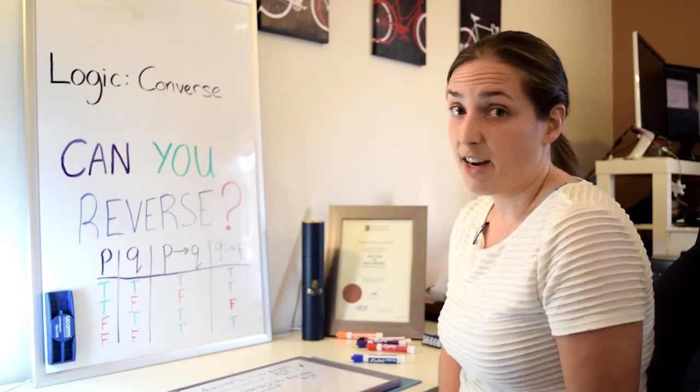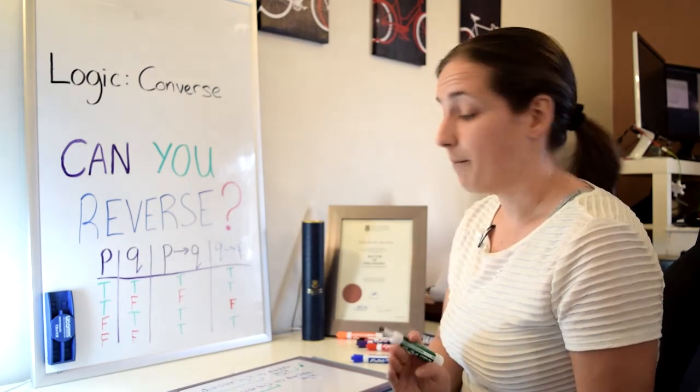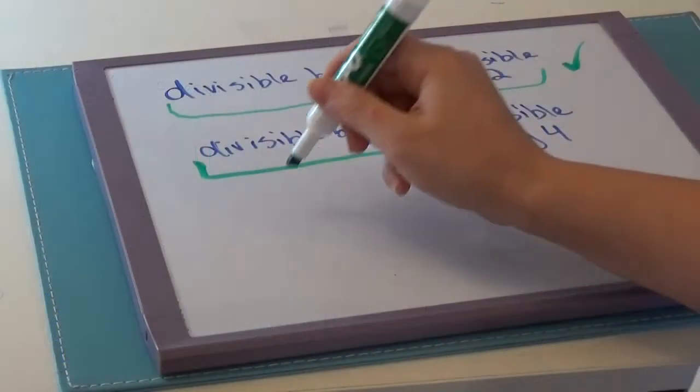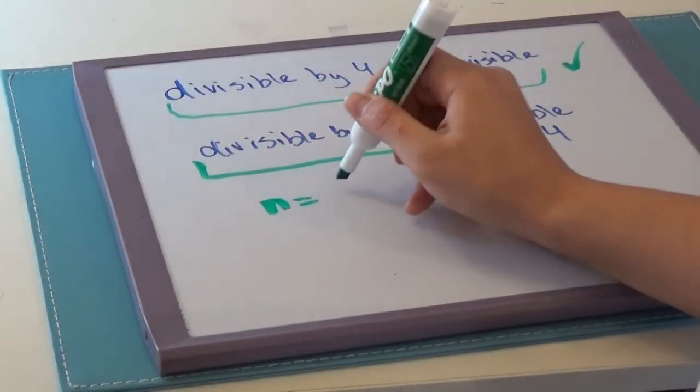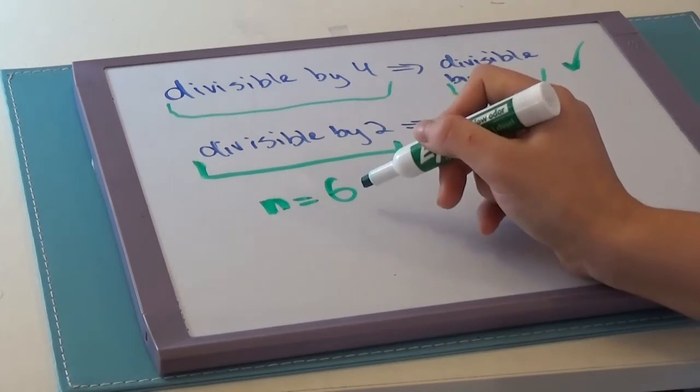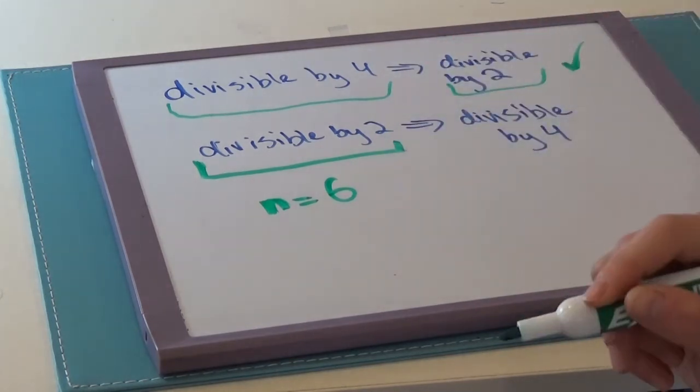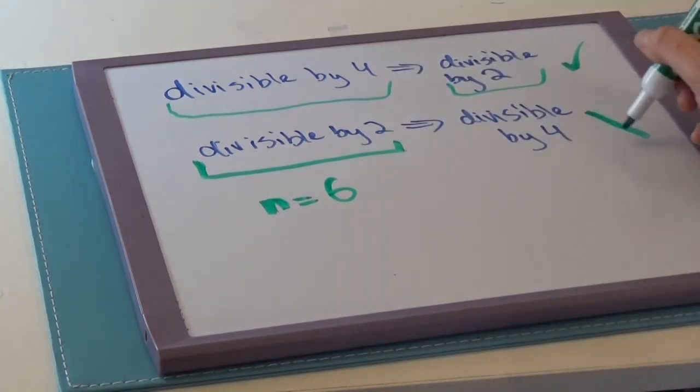No, because I can find many examples, but all you need is one. A particular example is something like n equals six. The number n is divisible by two, but it's not divisible by four. So this is not a true statement.